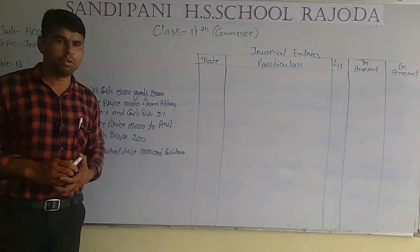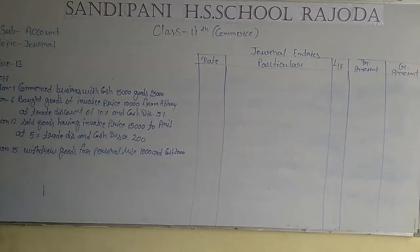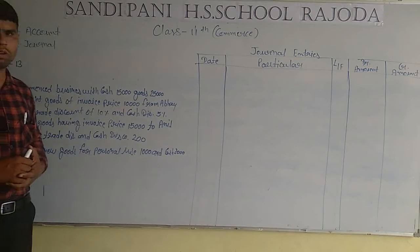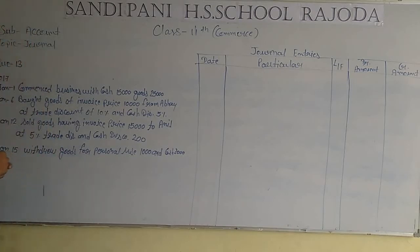Hello students. Today we will solve question number 13 in Class 11th Commerce. Our topic name is General Journal and Subsidiary Accounts.